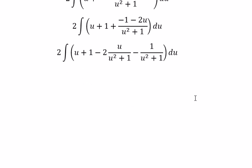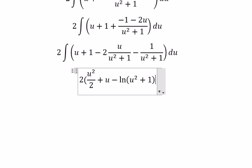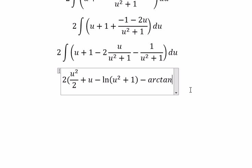And now we can get the final answer. The integral of u, you got about u squared over 2. Number 1 is about u. 2u over u squared plus 1, you got about ln of u squared plus 1. And the last one is about arctangent of u.